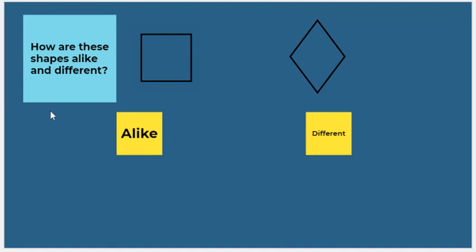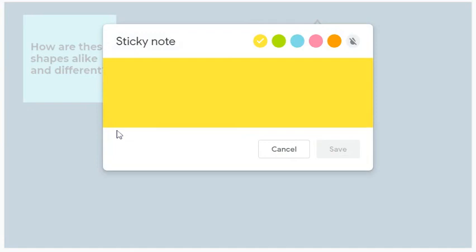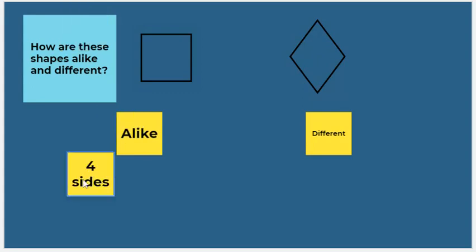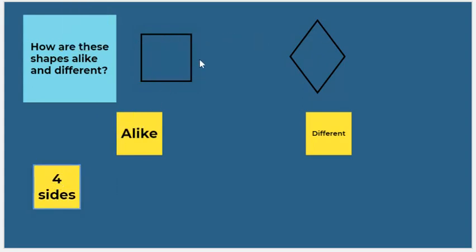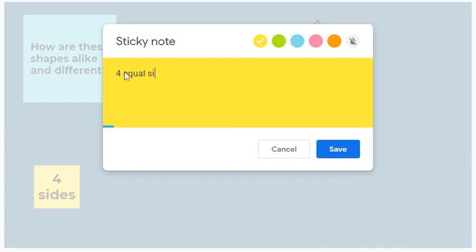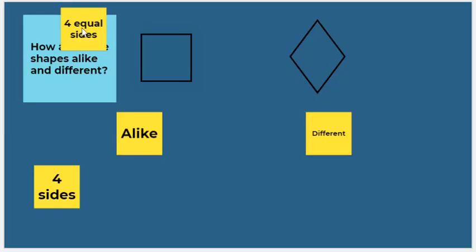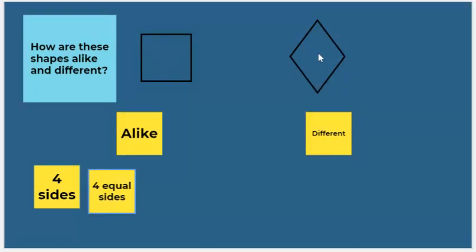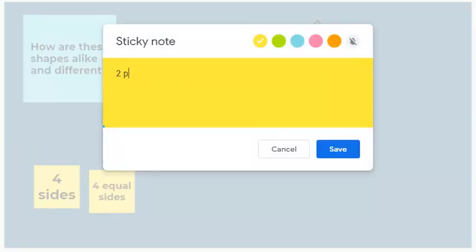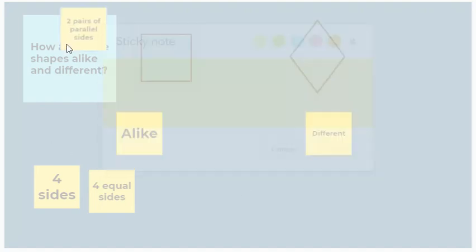Let's try one more activity. Take a look at these two shapes and let's discuss how they are alike and how they are different. How they are alike: they both have four sides. Also, this one has four equal sides and this one has four equal sides, so they both have four equal sides. They also both have two pairs of parallel sides.